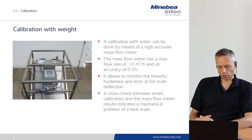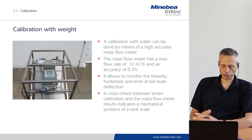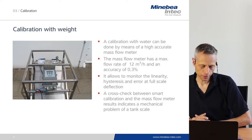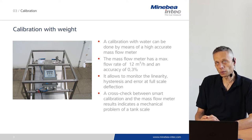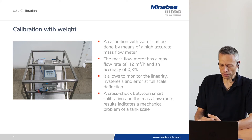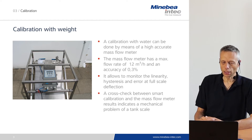Let's look into different alternatives of calibration with weights. One option is calibration with water, which can be done by means of high accuracy mass flow meters. The mass flow meter shown in this picture has a flow rate of 12 cubic meters per hour and an accuracy of 0.3%. So you can imagine that filling a high capacity silo with water can already take several hours — for example, a 50 cubic meter silo will take at least 4 hours filling time. The accuracy of 0.3% is already good for a flow meter, but sometimes the accuracy required of a process vessel scale needs to be higher.